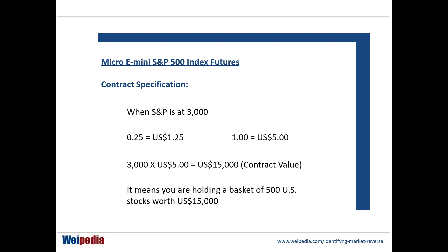Say you decide to buy at 3,000 points with a short-term view of two or three days. If I'm not satisfied with one lot at $15,000 exposure and I feel more confident, I may want to trade 10 lots — 10 micro e-mini S&P — which is 10 times $15,000, representing $150,000 worth of exposure for the next two or three days. It's always about mindfulness of the contract value and the exposure you're taking on.